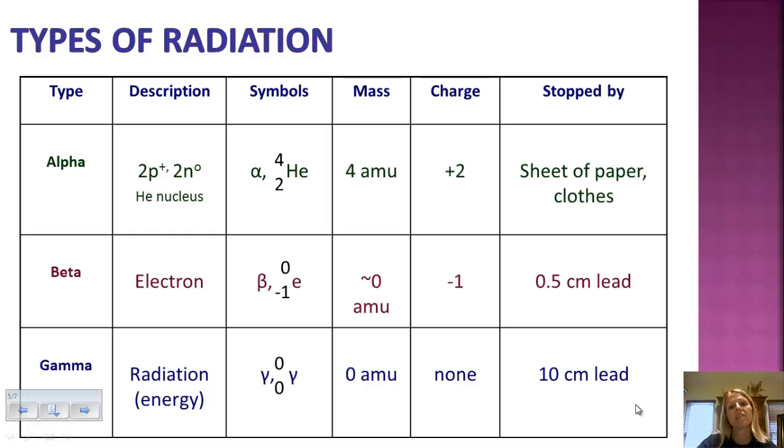There are three different types of radiations that can be released. So I said that they undergo radioactive decay and they emit radioactive energy or particles. And those particles are either alpha, beta, and gamma. We're going to go over each one of these in detail.